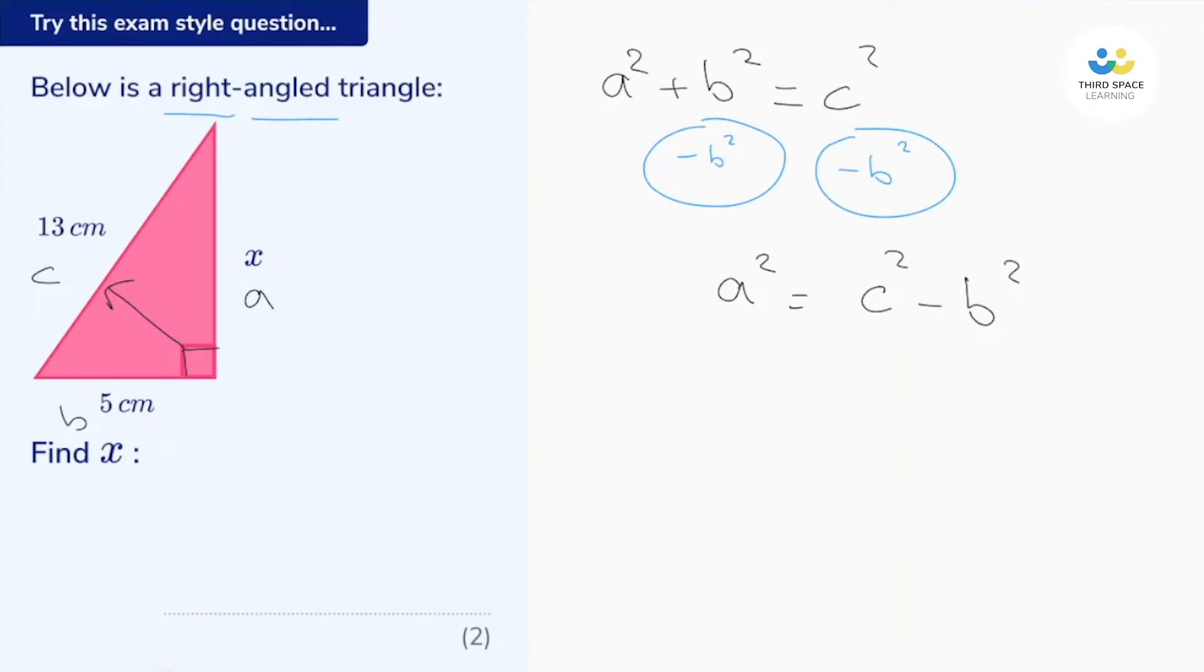So let's put the numbers in. Well, a is x, so let's replace that - x squared. C is 13, so that's 13 squared, and b is 5. So take away 25 is 144. So that's x squared. We want to work out the length x, so let's take the square root of that: 144 square rooted, which is 12. And the all important units are centimeters.